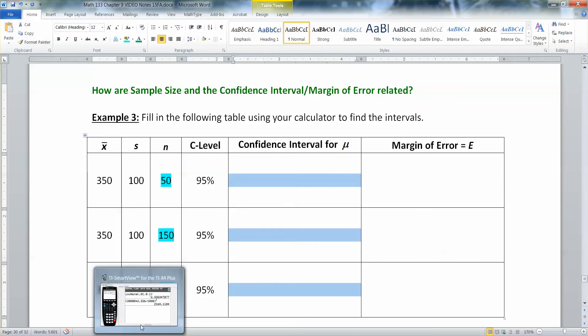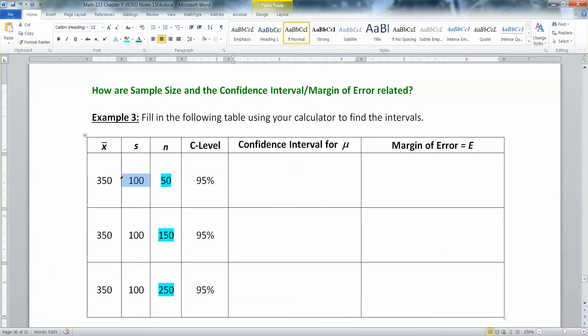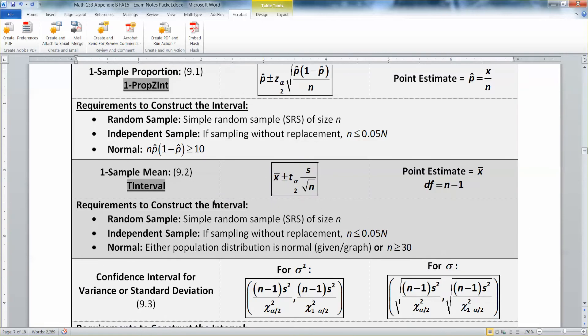Now remember, you can find confidence intervals very quickly and easily with a calculator. Now the confidence interval for a mu, now how would we know that? Well, go back to your appendix and look at the confidence interval formulas.